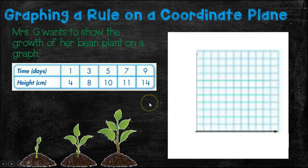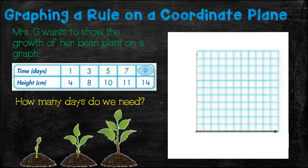So for example, I want to show the growth of my bean plant on this graph. So how many days do we need according to the graph? Well, our highest number of days is 9. So we need at least 9 days on our graph. So we'll just go ahead and do 10. Remember, the line on the bottom has an arrow because this is showing that this graph continues going on and on and on on the x-axis.